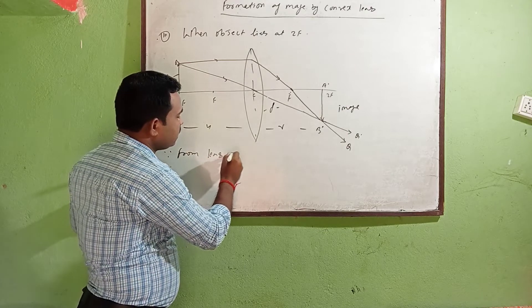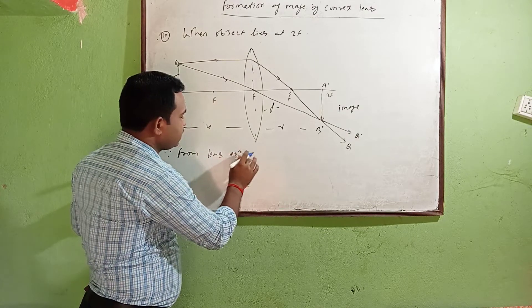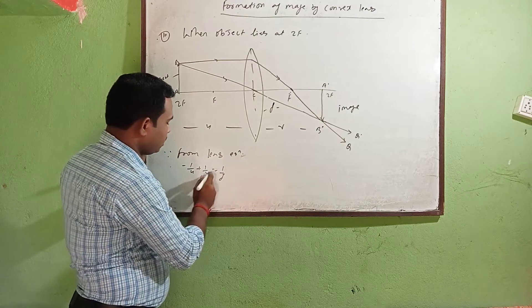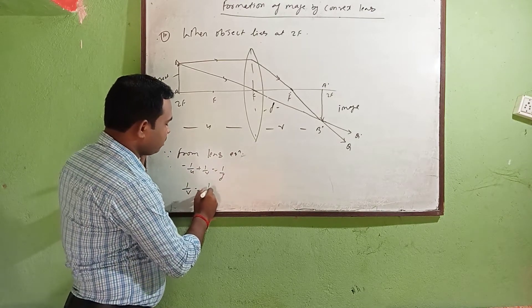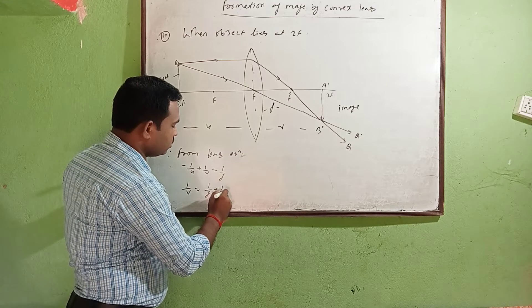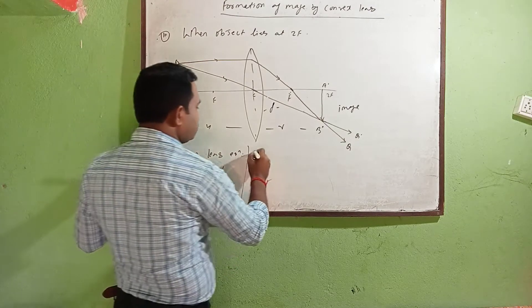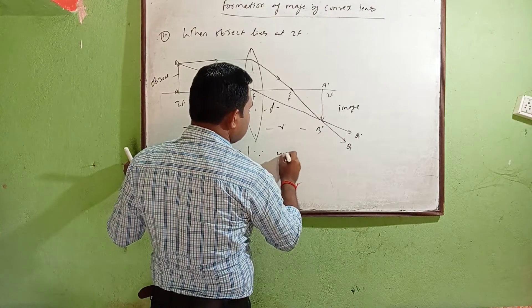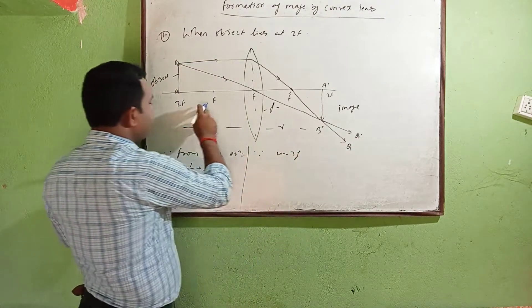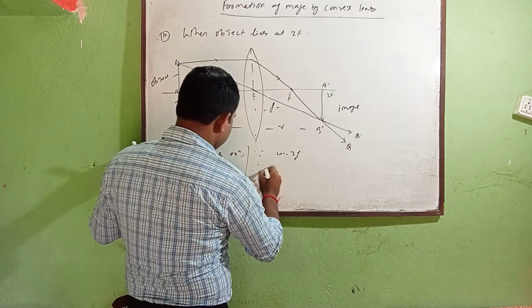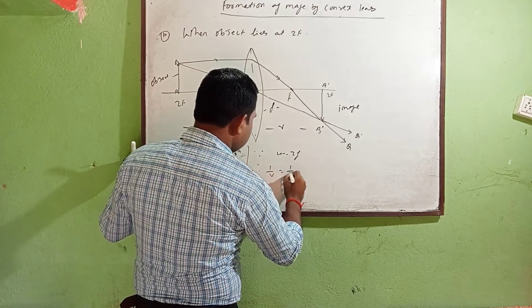From lens equation: 1/v = 1/f + 1/u. You will write this. But you have u = 2f. Since you can write here u = 2f, if you put here u = 2f, then you will write therefore 1/v = 1/f + 1/2f.